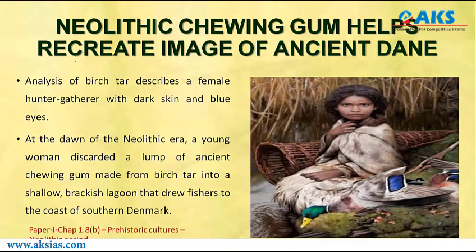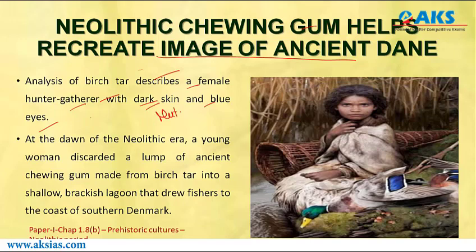The fourth important news article: Neolithic chewing gum helps recreate the image of an ancient Dane. Analysis of the birch tar describes a female hunter-gatherer with dark skin and blue eyes — a very rare phenomenon. The color of eyes is always hereditary and genetic in nature, but apart from genetics, mutation also plays an important role. Sometimes these mutations result in beautiful phenomena like blue eyes or green eyes.